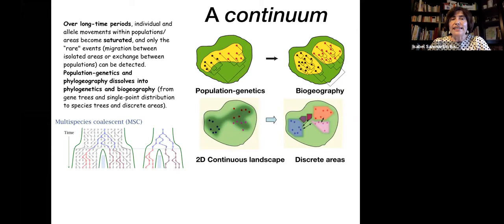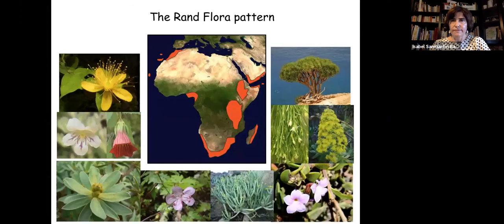At that point, population genetics and phylogeography dissolve into phylogenetics and biogeography. We are no longer concerned with the movement of individuals in a 2D landscape with single geographical coordinates, but more interested in rare events of movement — for example, one species dispersing from Europe to Africa in geological or evolutionary time. My example today to show the difficulties of bridging these two levels is the Rand Flora.